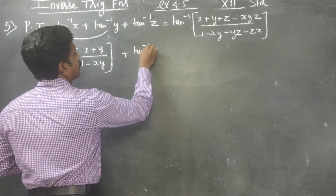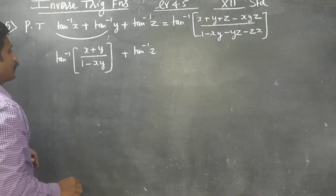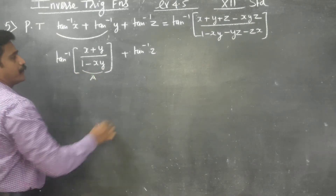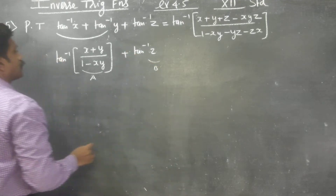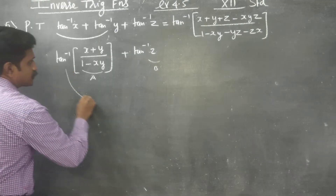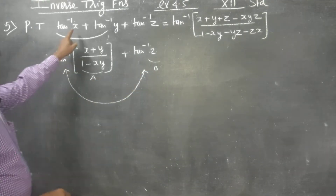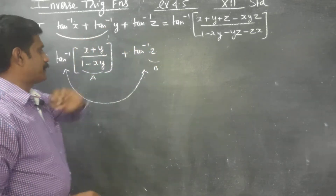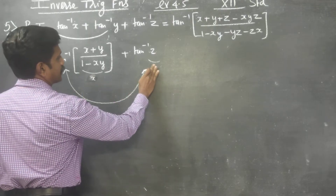We have tan inverse of z remaining. Now, this result from combining the first two terms is my A, and tan inverse of z is my B. These are the two terms. I am going to combine these two. Like X and Y — this is my X and this is my Y.